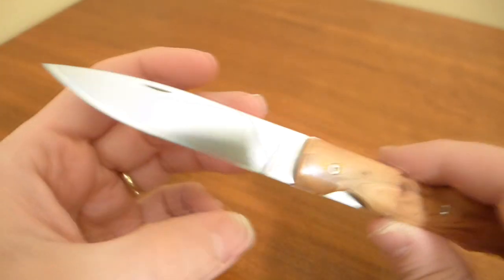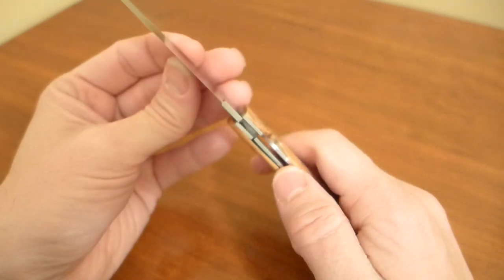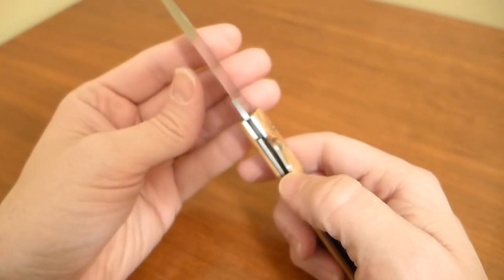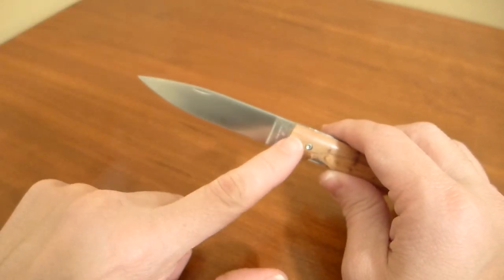It's a flat ground blade. It came razor sharp. And this lockback, or this liner lock, is super solid. It's dirty but I'm going to get no blade play anyway, any direction.